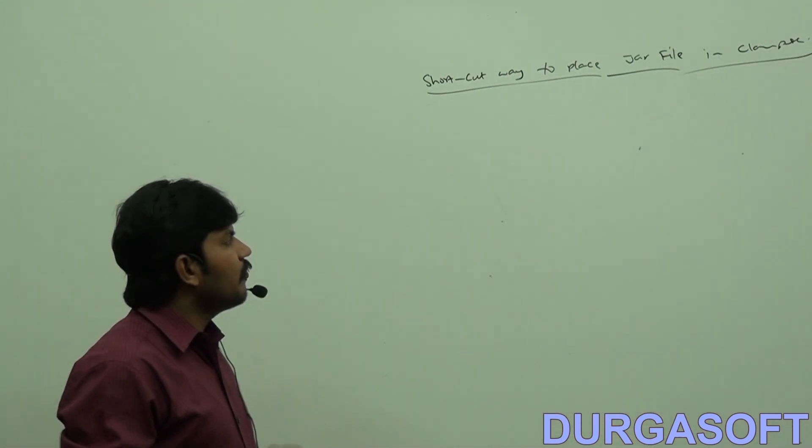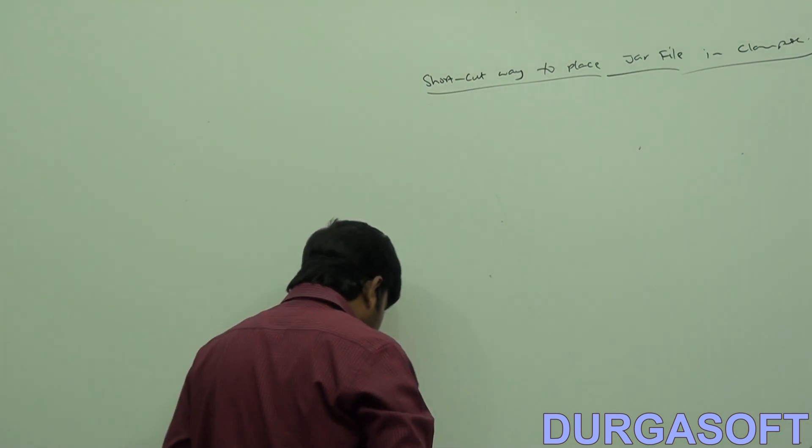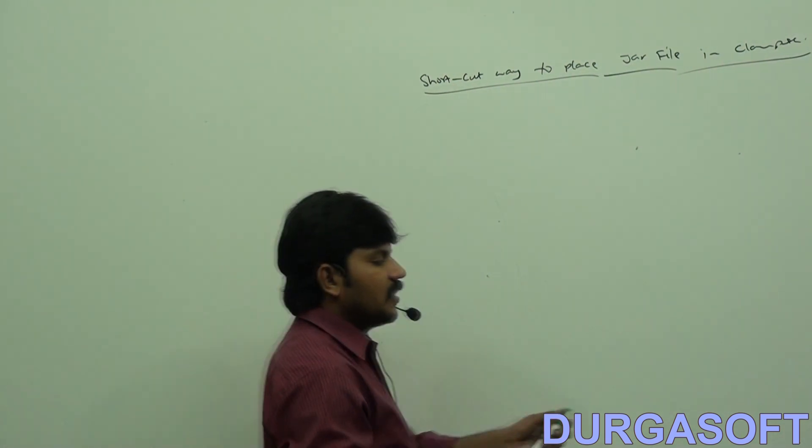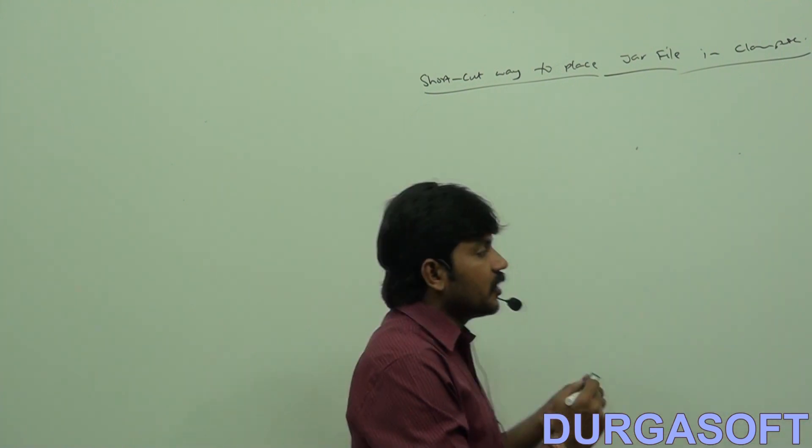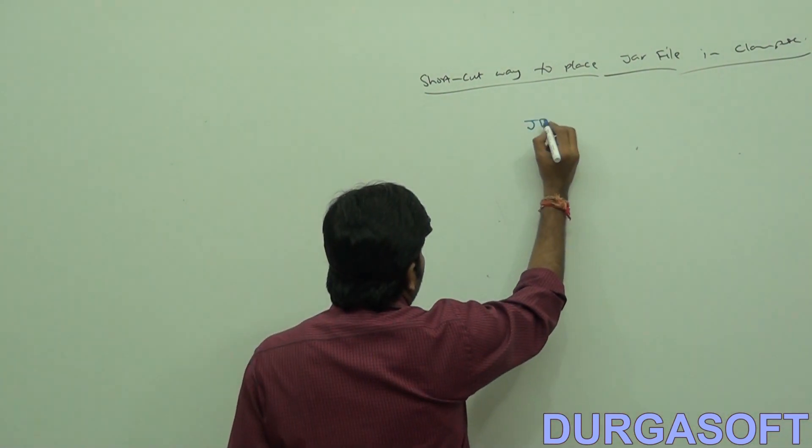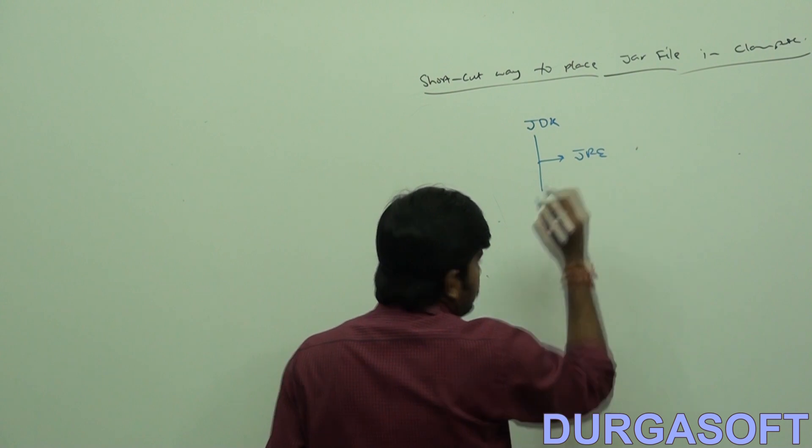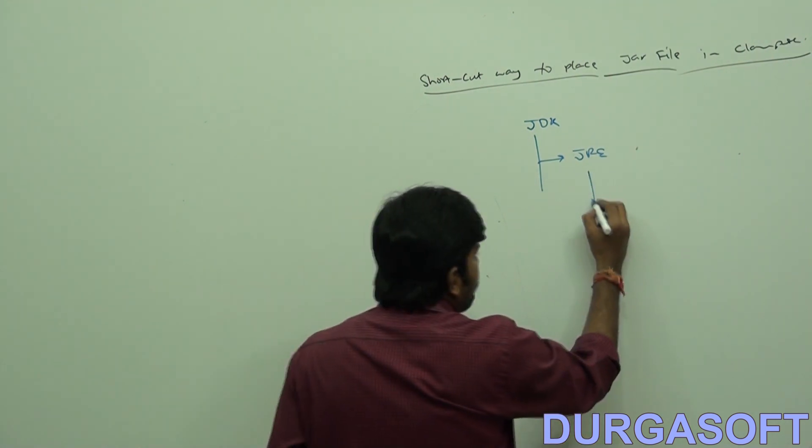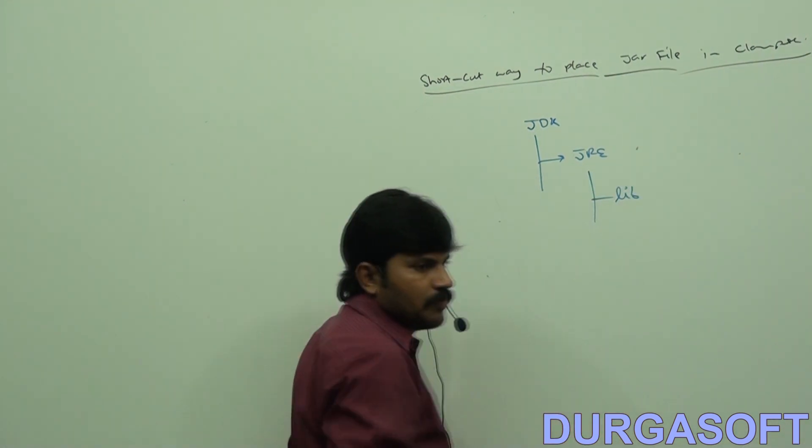So we have one location: JDK. We have one location JDK, within the JRE is there, within the lib, library.